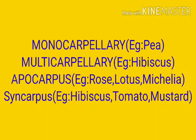The carpels may be free or united. When free, it is called apocarpous — for example, rose, Michelia, and lotus. When united, it is called syncarpous — for example, hibiscus, tomato, and mustard.